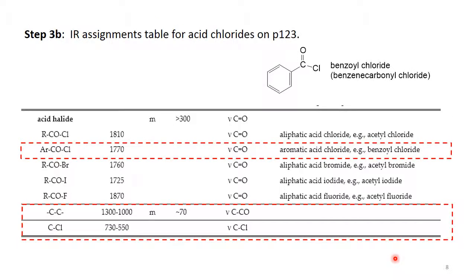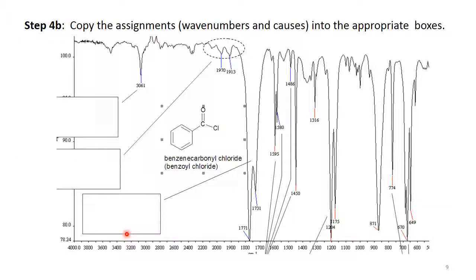Here is the assignment table for acid chlorides. For the aromatic acid chloride, the carbonyl stretch is at 1770 wavenumbers, with a C-to-CO stretch between 1000 and 1300 wavenumbers, and a C-to-Cl stretch between 730 and 550 wavenumbers. Here is the scan of benzoyl chloride — you should not have too much difficulty finding the carbonyl stretch. There is some splitting, but nothing else like a carbonyl absorbs in this region.